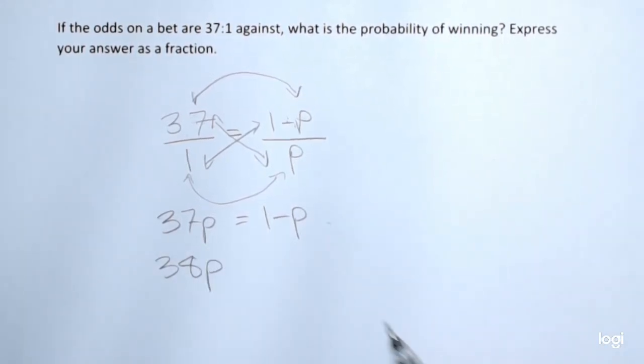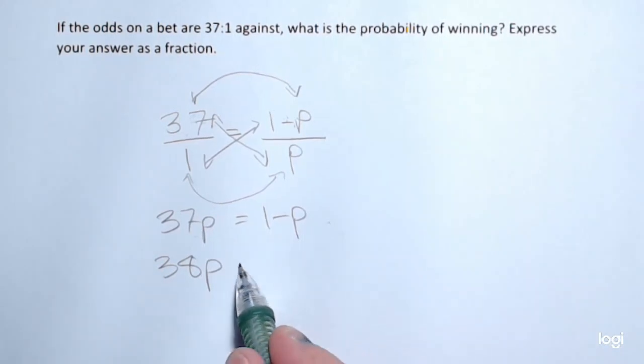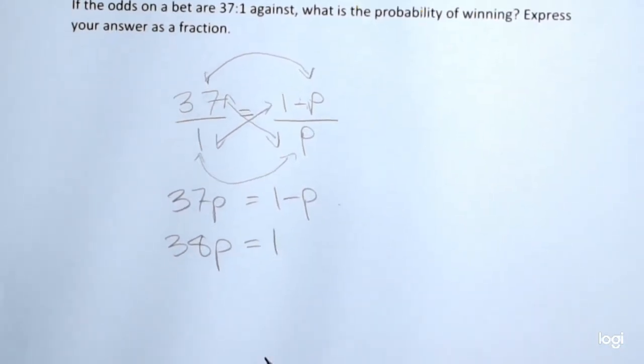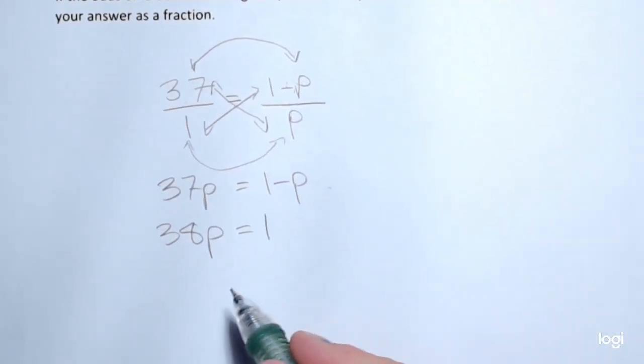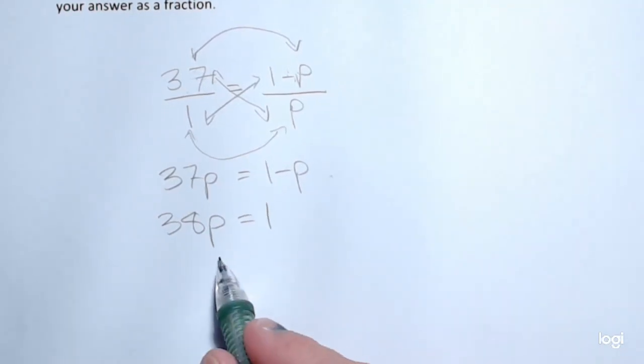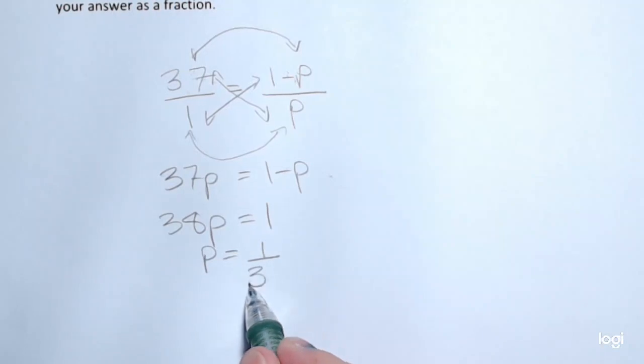Adding p to both sides of the equation is equal to 1. Last step to solve this. I want to divide both sides by 38. So the probability of winning in this problem is 1 out of 38.